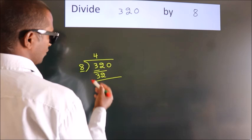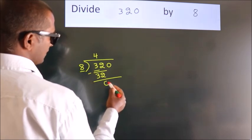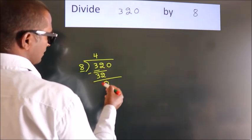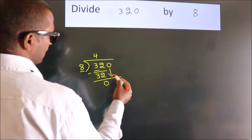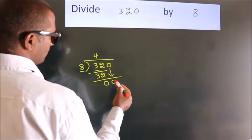Now we should subtract. We get 0. After this, bring down the beside number. So 0 down. So 0.